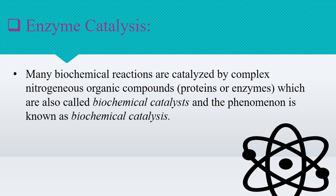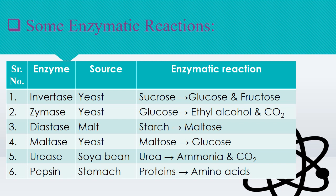Some enzymatic reactions that take place in our day-to-day life: conversion of sucrose to glucose and fructose in the presence of the enzyme invertase; glucose then converted into ethyl alcohol and carbon dioxide with the help of zymase; starch converted into maltose using the enzyme diastase; and maltose converted into glucose. Starch and maltose are carbohydrates that we will learn about in biomolecules.